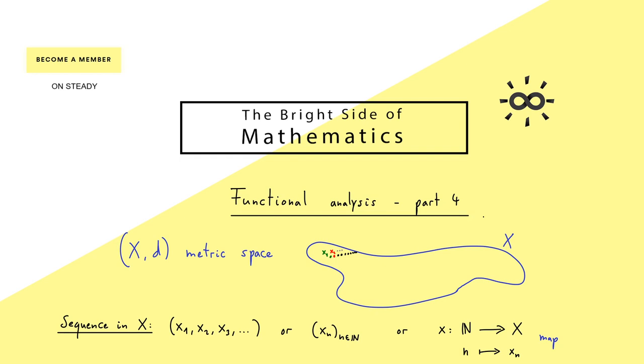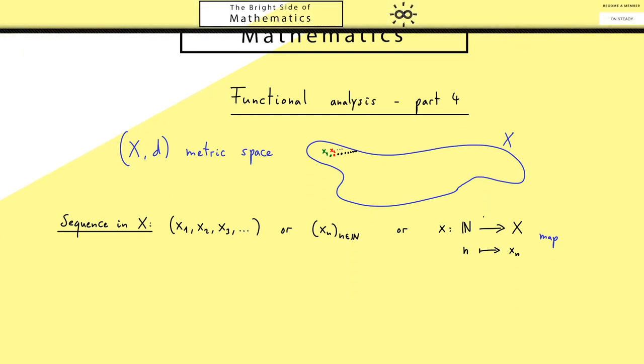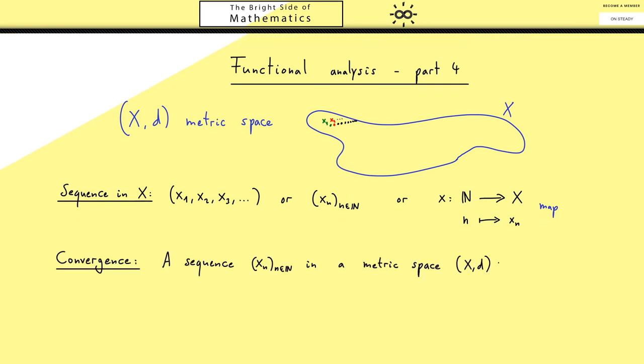Because we can measure distances in a metric space we can also talk about convergent sequences. A sequence xn in a metric space (x,d) is called convergent if there is a limit point we call x tilde. So what we want is that the members of the sequence get closer and closer to this limit point x tilde. Of course we already know how to measure such closeness.